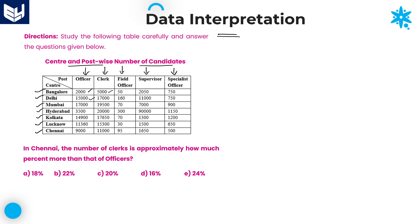That is the given information. Based on that, we need to solve the questions. The first question is: in Chennai, the number of clerks is approximately how much percent more than that of officers? Here we are talking about Chennai, and the cadres are clerks and officers.